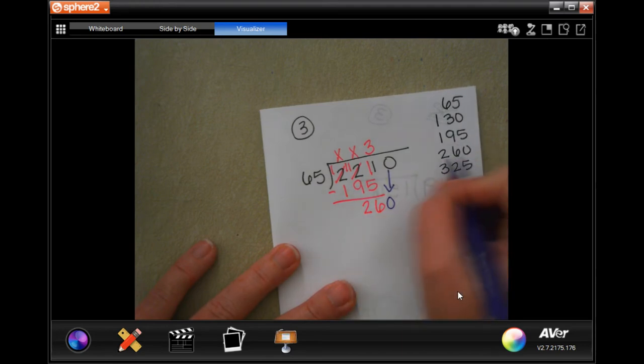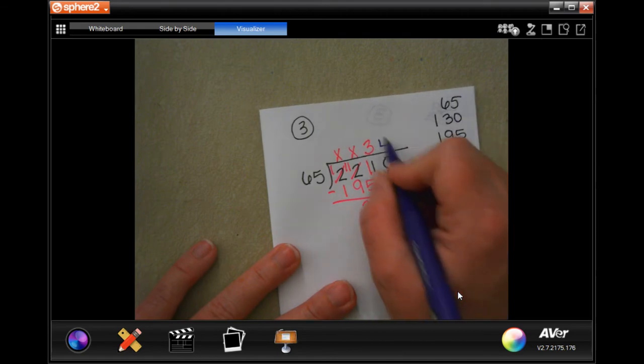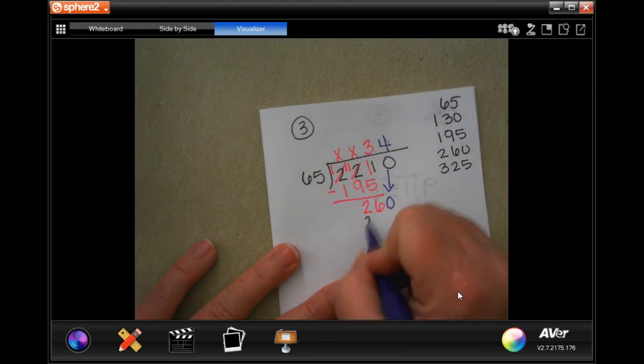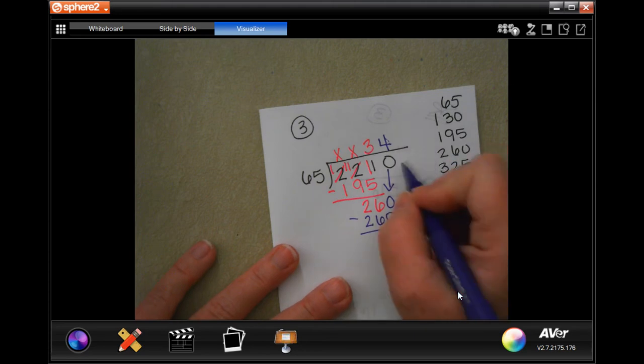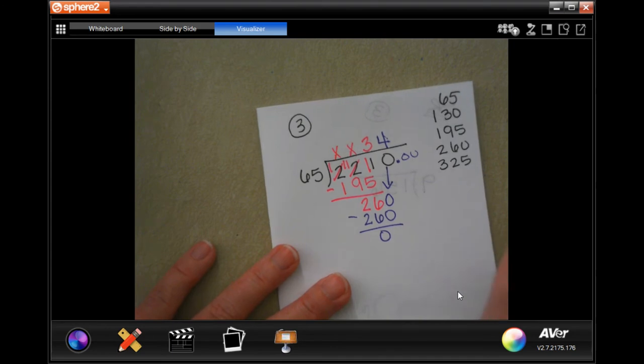And that means that 11 minus 5 is 6. 11 minus 9 is 2. And 1 minus 1 is nothing. 26 is smaller than 65. So, I'm going to go ahead, and I'm going to bring down my 0. 260. There's 1 right there that's 260. So, that's 4 times. Which was 260. Now, we don't have to worry about going out to the 100th place here, because there's nothing there. We could put decimal 0, 0, and we could put decimal 0, 0 there, but we don't have to.